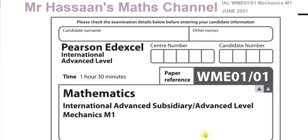Welcome back to Mr Hassan's Math Channel. In this video I'm going to start going over the Mechanics M1 International A-Level, the Edexcel Pearson exam from June 2021, which was affected by COVID. They actually released the paper and it was used as some sort of assessment. I'm going to be going over this paper in these videos, which you'll find collected together in the playlist in the description.